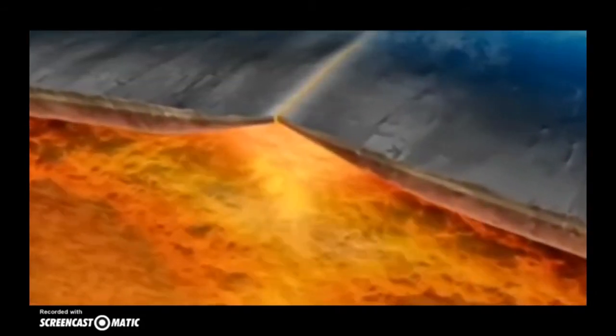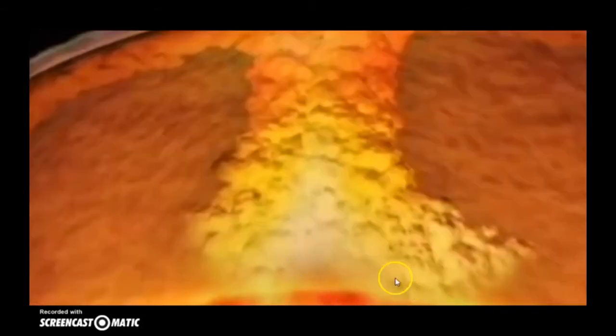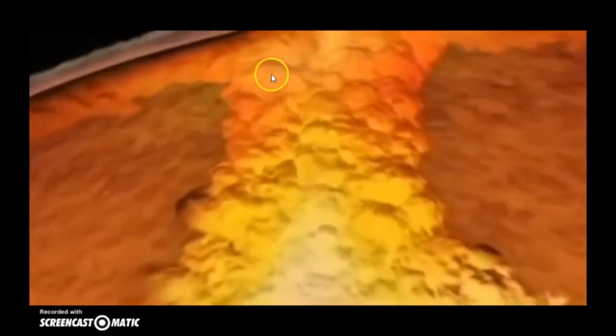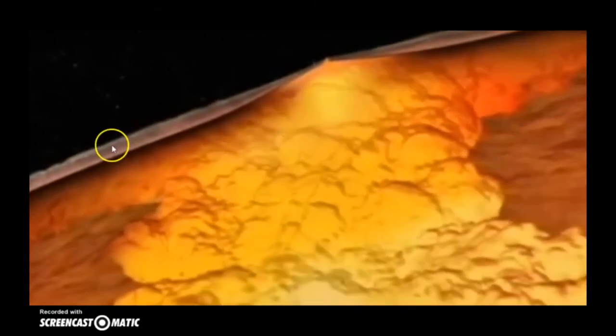And that less dense part of the mantle is able to rise up. Let me show that to you again. So down here is the core, and that hot mantle material is less dense and will rise up slowly. And as it rises up, it does a convection current. Some of it goes this way, some of it goes that way, and it drags these plates along with it.